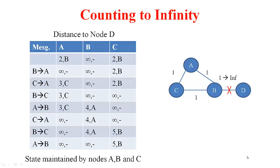So here is the problem. This algorithm unfortunately introduces loops when the network topology changes. In this example, we have four nodes. The cost of the links is 1, and the link between B and D has broken, causing the cost to change from 1 to infinity. Here I am going to show the state being maintained at nodes A, B, and C as far as destination D is concerned. Originally A can reach D via B, and this is the state it is maintaining.